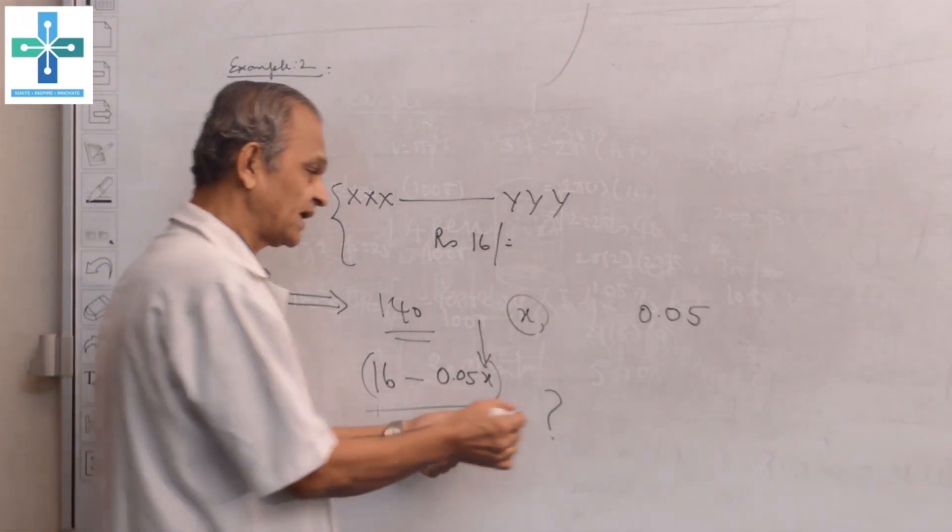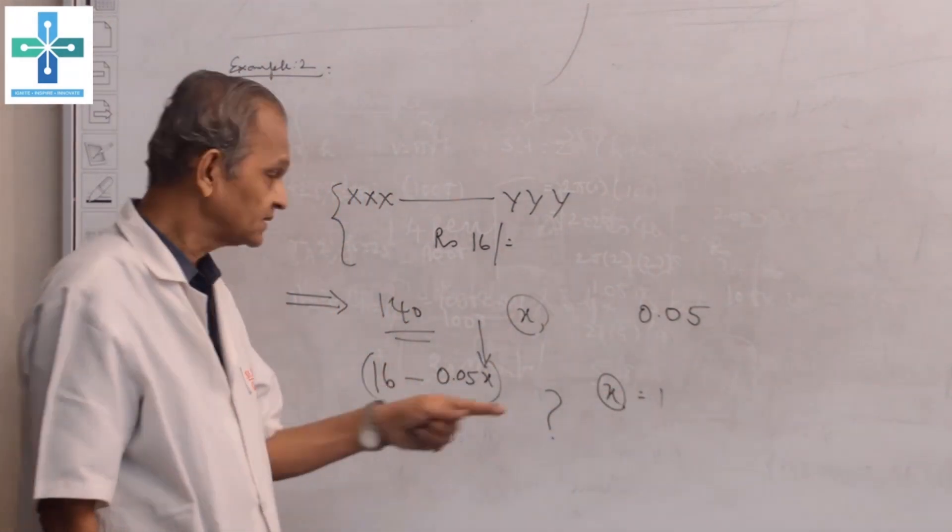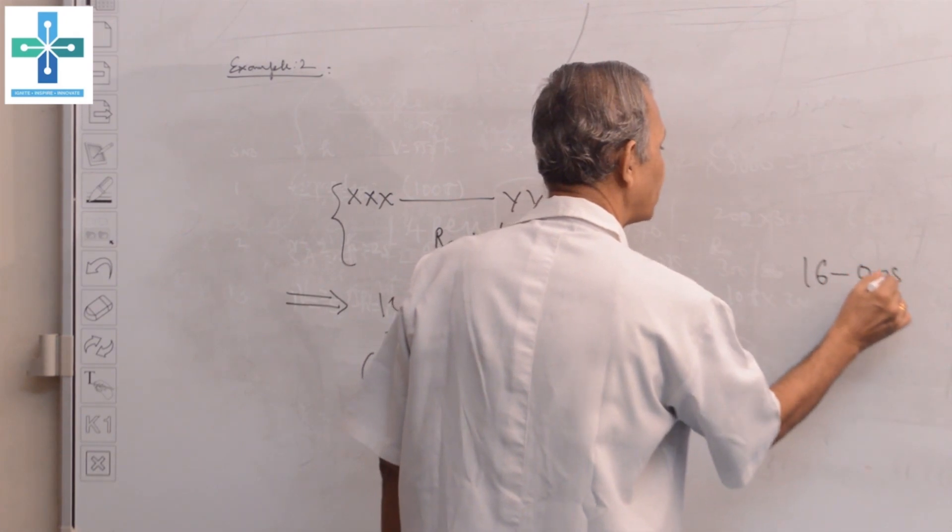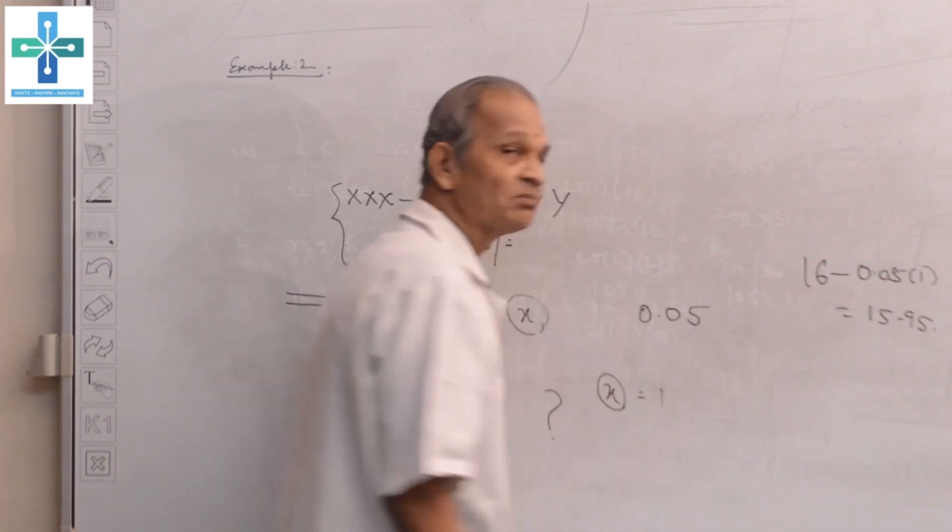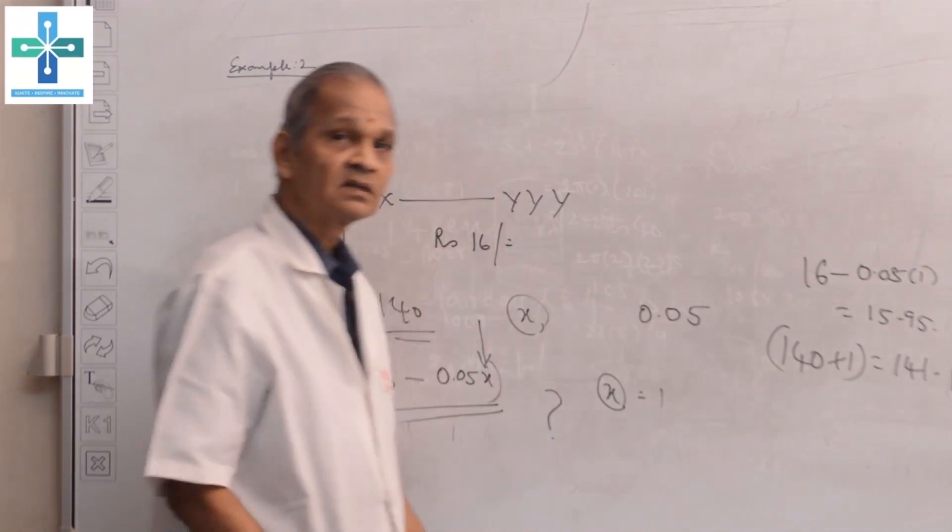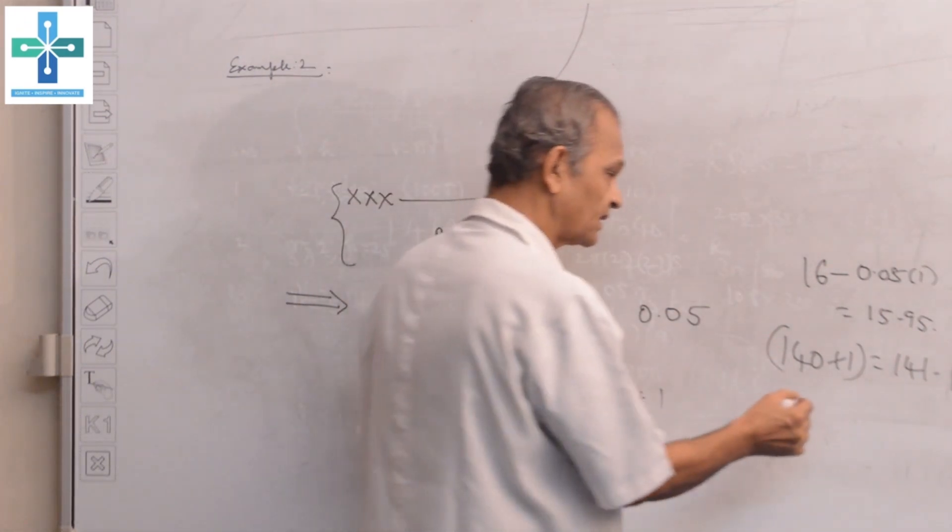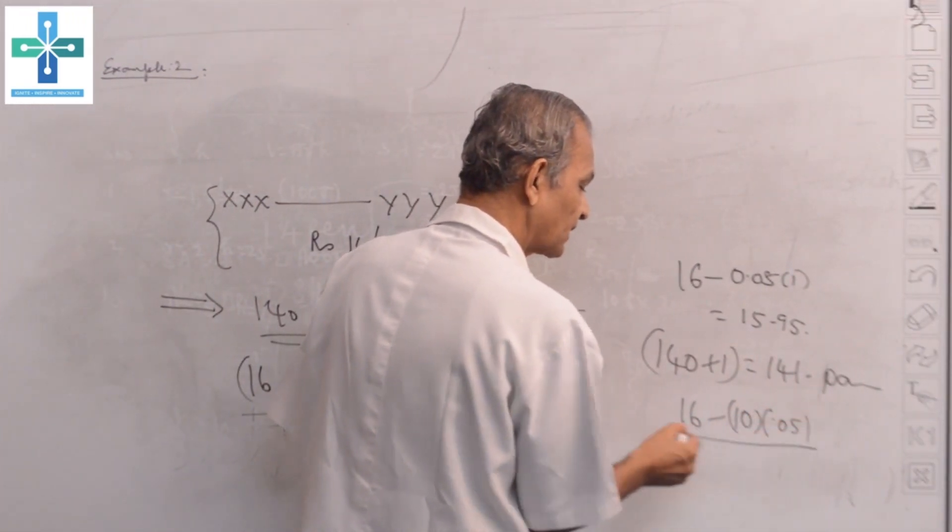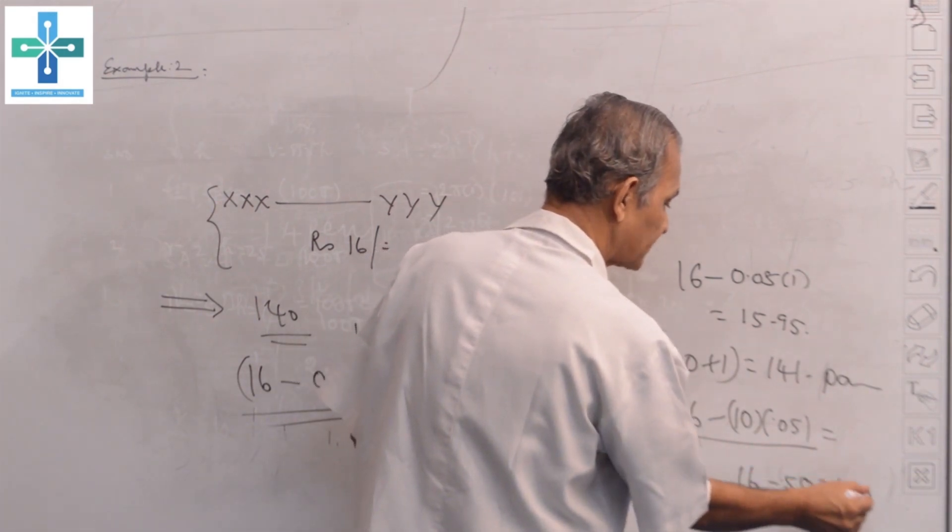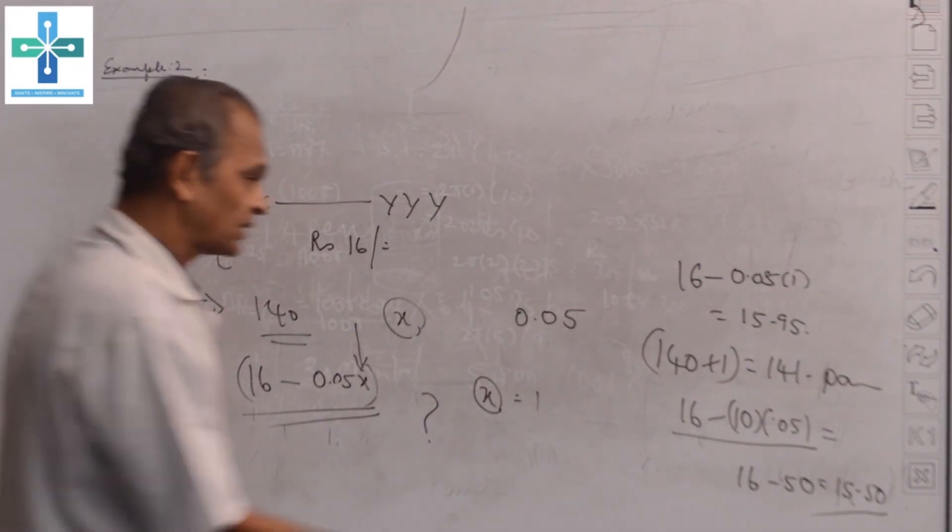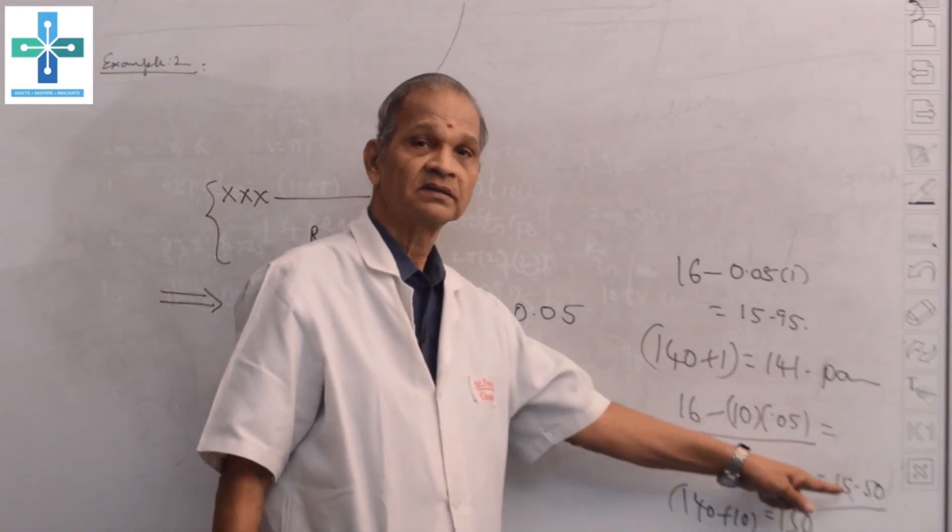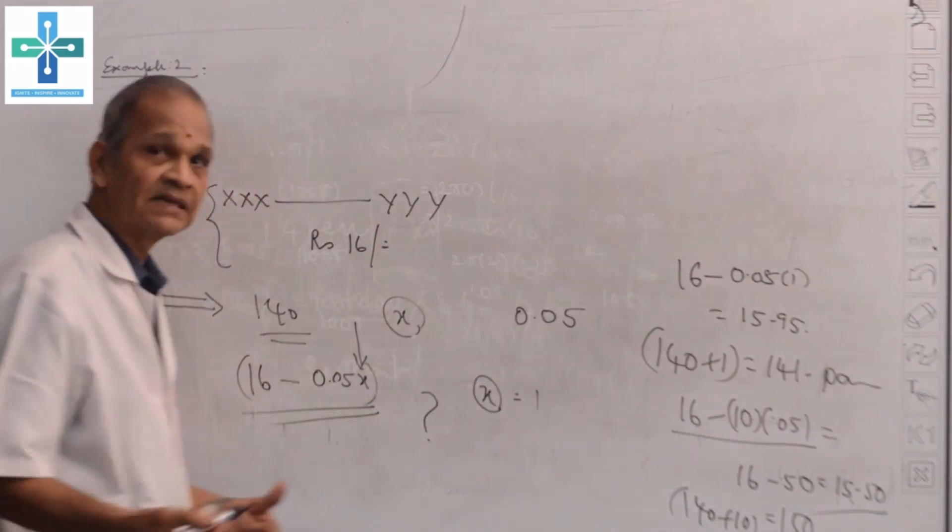What will happen if X is only one? Only one person more than 140. The concession is only 5 paisa. The ticket price will be 16 rupees minus 5 paisa equals 15 rupees 95 paisa per ticket, given for all 141 passengers. Suppose 10 people are more than 140, the cost will be 16 minus 50 paisa equals 15 rupees 50 paisa for all 150 passengers.